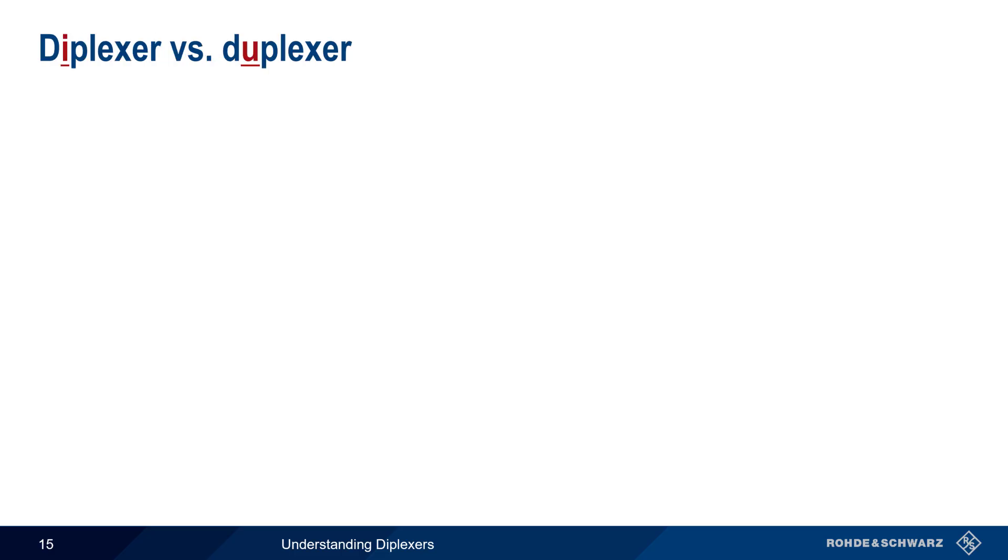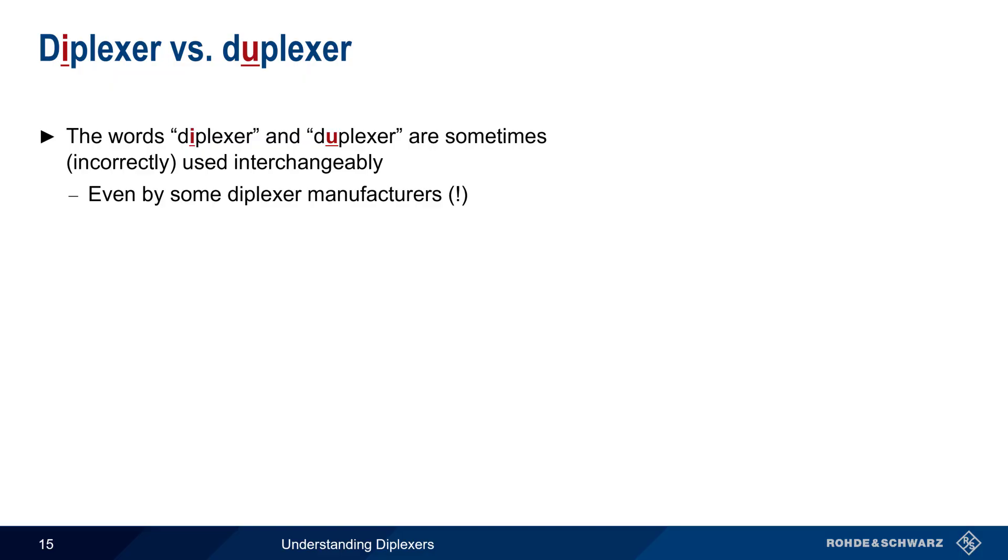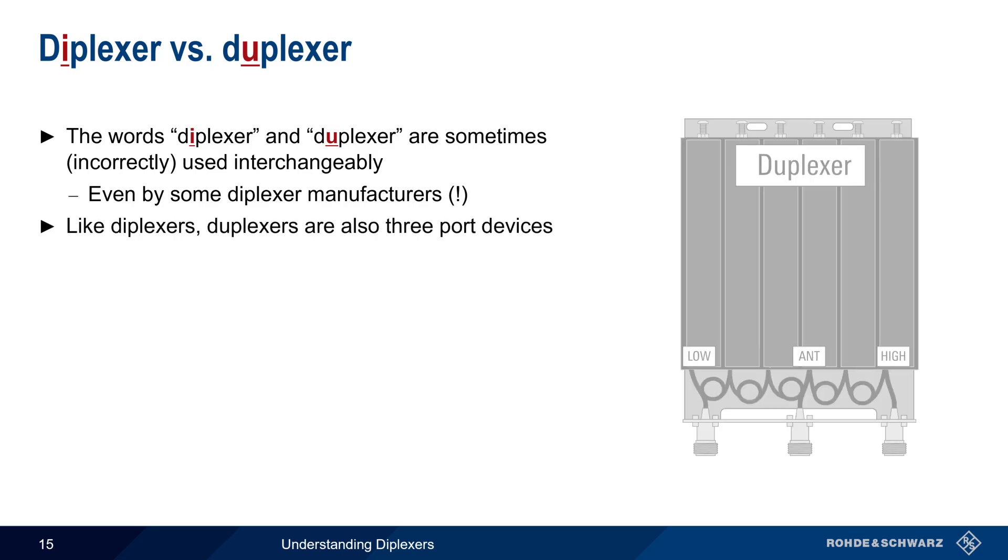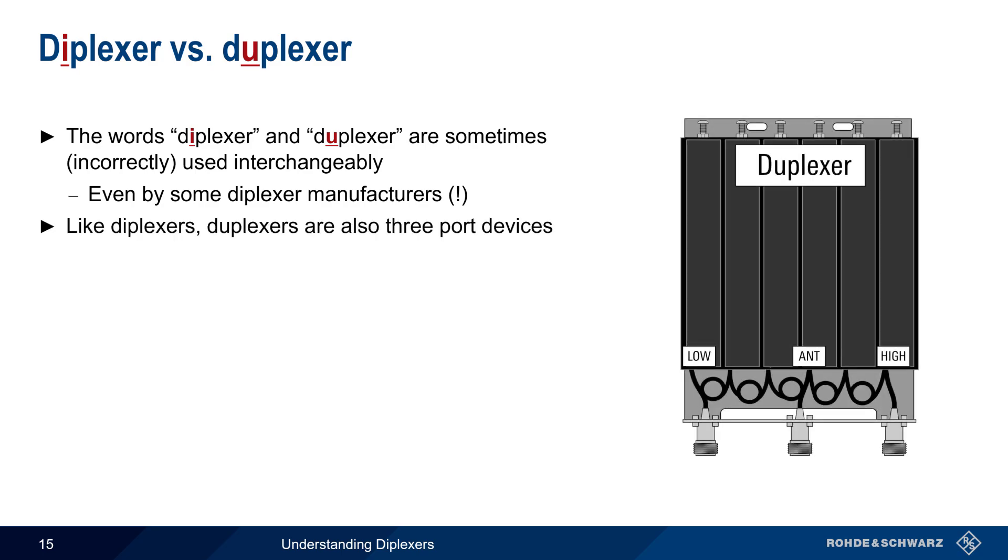Before we end this presentation, let's briefly explain the difference between diplexers and duplexers. These words are sometimes used as if they were interchangeable, and even some diplexer manufacturers have been known to do this as well. This is a somewhat understandable mistake, because like diplexers, duplexers are also three-port devices that combine signals onto a single common antenna port. However, duplexers are normally used to isolate very closely spaced transmit and receive frequencies.